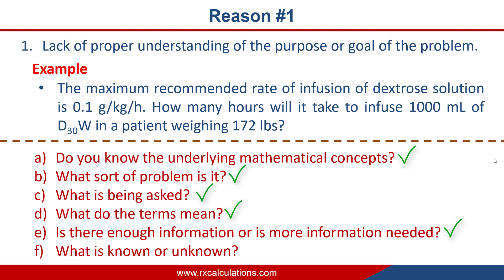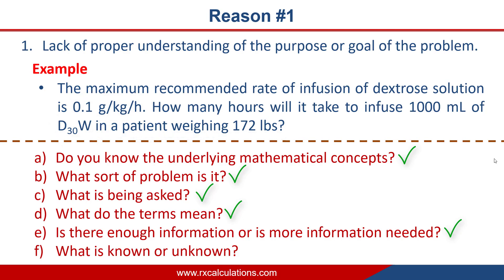Finally, ask: what is known and what is unknown? In this example, we know the mass rate — 0.1 grams per kilogram per hour — we know the volume of preparation to be infused: 1000 milliliters of D30W, and we know the patient's weight. The one thing we don't know is the time it takes to infuse the 1000 milliliters of D30W.